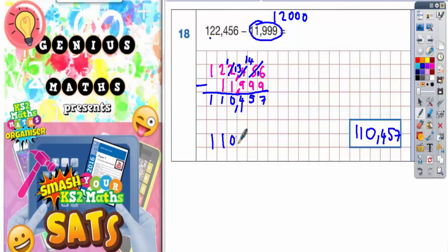So if you're on 110,456 and you've taken off 12,000 that's one too many. So you add on the one back to the 110,456 and you would actually get 110,457.